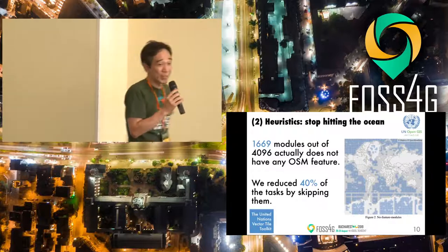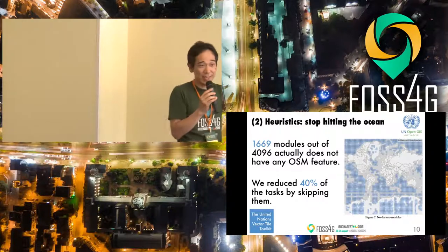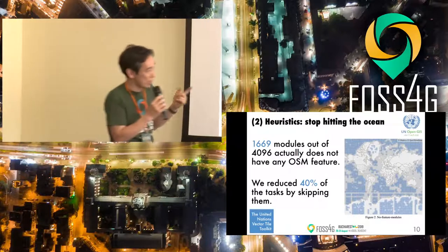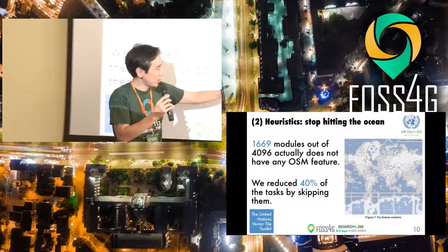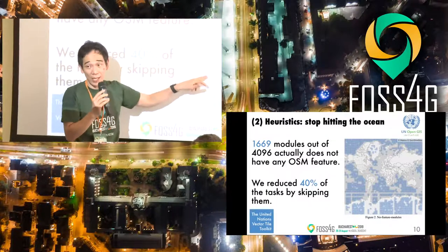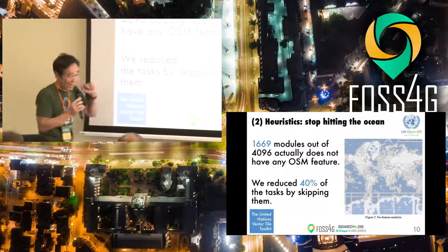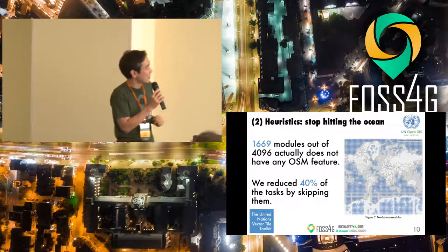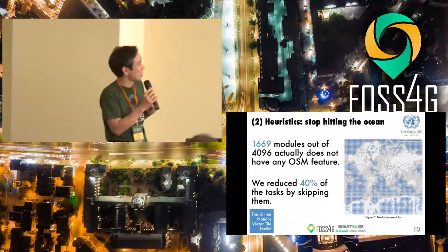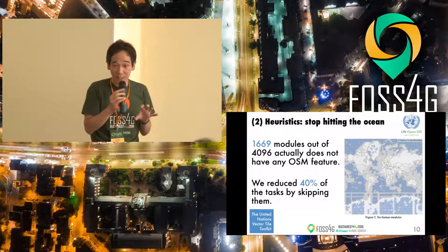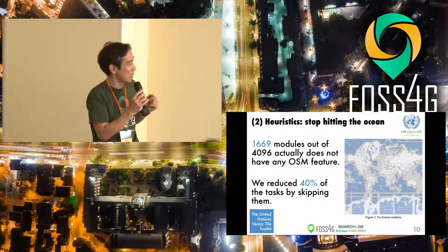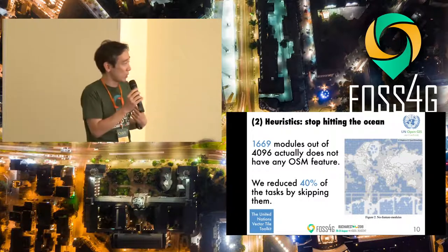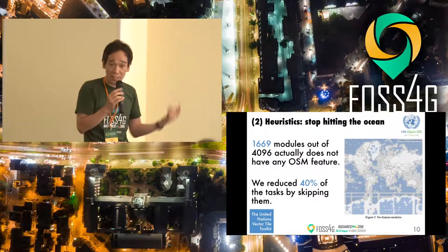The second measure is a heuristic one. If we look at the Earth, 70% is actually ocean. Each module covers maybe hundreds of kilometers by hundreds of kilometers, but when we checked the data content itself, more than 1,600 modules are actually empty in the OSM data. So we simply skip these roughly 40% of modules and concentrate on the remaining 60%.